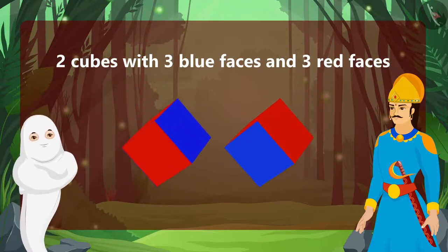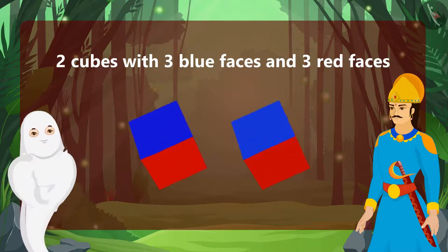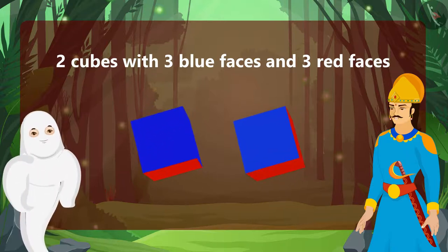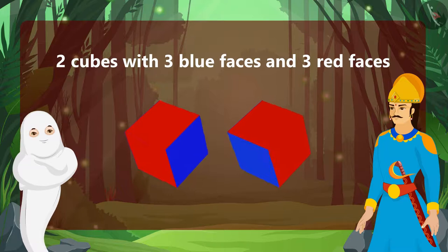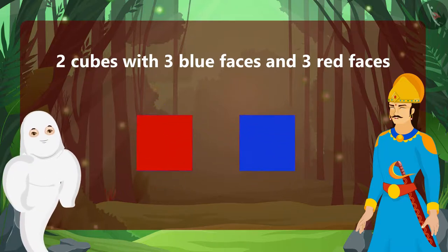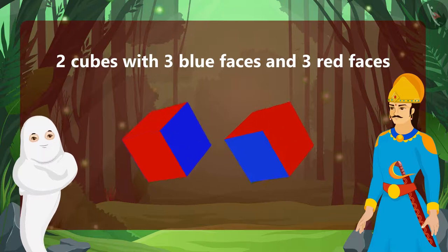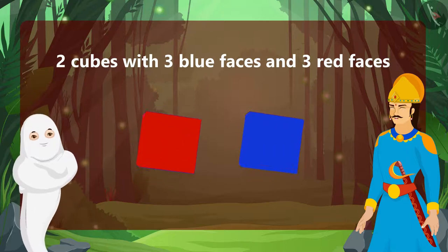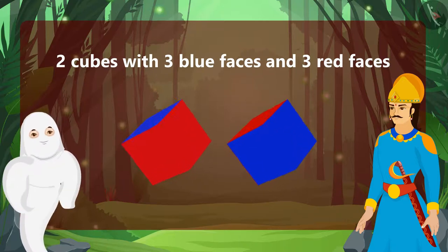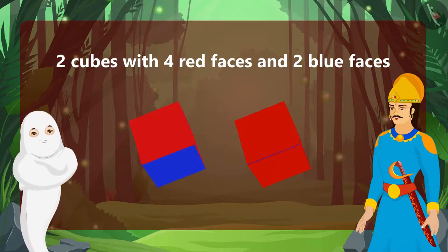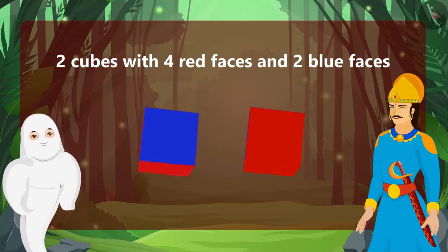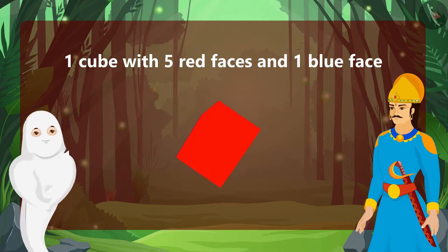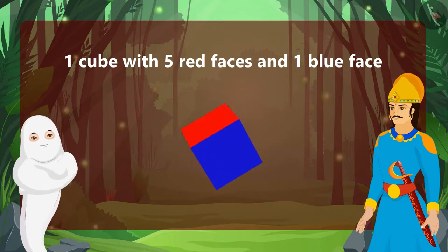Next, increase the number of faces painted in red by one more. This cube would have three red faces and three blue faces. This, again, can be done in two unique ways, so he will have two such unique cubes. Now, increasing the number of faces in red by one more, he will have two unique cubes with four red faces and two blue faces. Finally, increasing the number of faces in red by one more, he will have just one more cube with five red faces and one blue face.